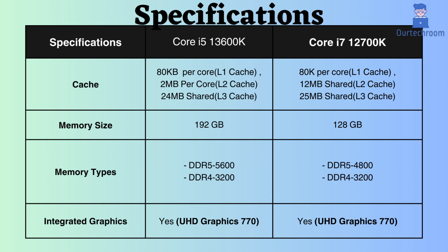The Core i5-13600K supports up to 192 GB of RAM, while the Core i7-12700K supports only 128 GB. Both processors support DDR4 and DDR5, with a consistent RAM frequency of 3,200 MHz for DDR4. However, the speed for DDR5 RAM differs, with the i5-13600K supporting 5,600 MHz and the i7-12700K supporting 4,800 MHz.